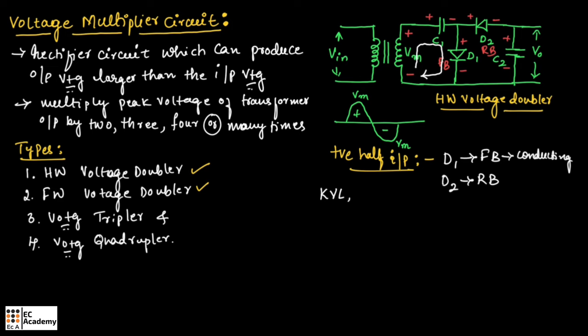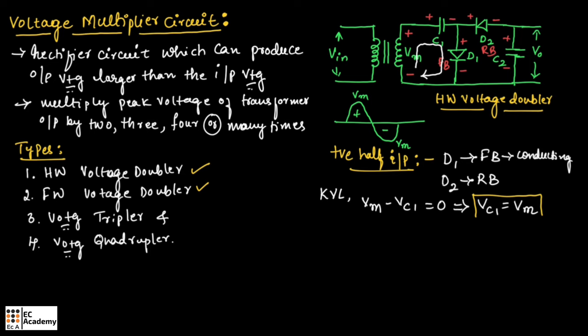If you apply Kirchhoff's voltage law and consider this branch, moving from negative to positive we take it as positive, and positive to negative we take it as negative. So we can write: Vm minus Vc1 equals 0. Therefore, voltage across capacitor C1 will be equal to Vm. So the capacitor will be charged with voltage Vm.